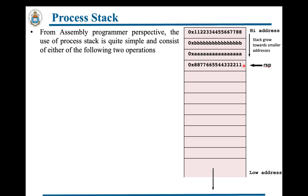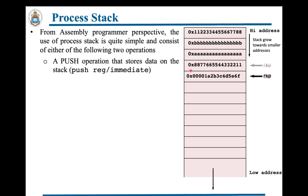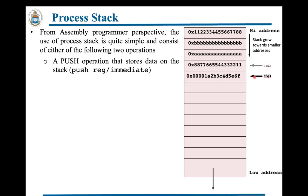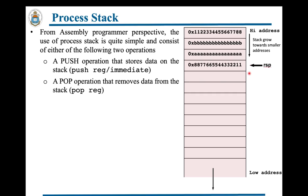From an assembly programmer's perspective, the stack consists of two operations. The push operation stores data on the stack: once a push instruction executes, eight bytes of data are placed at the top and RSP moves down towards smaller addresses. The pop operation removes data from the top of the stack and RSP moves back toward higher addresses. The stack grows towards smaller addresses and shrinks towards higher addresses.